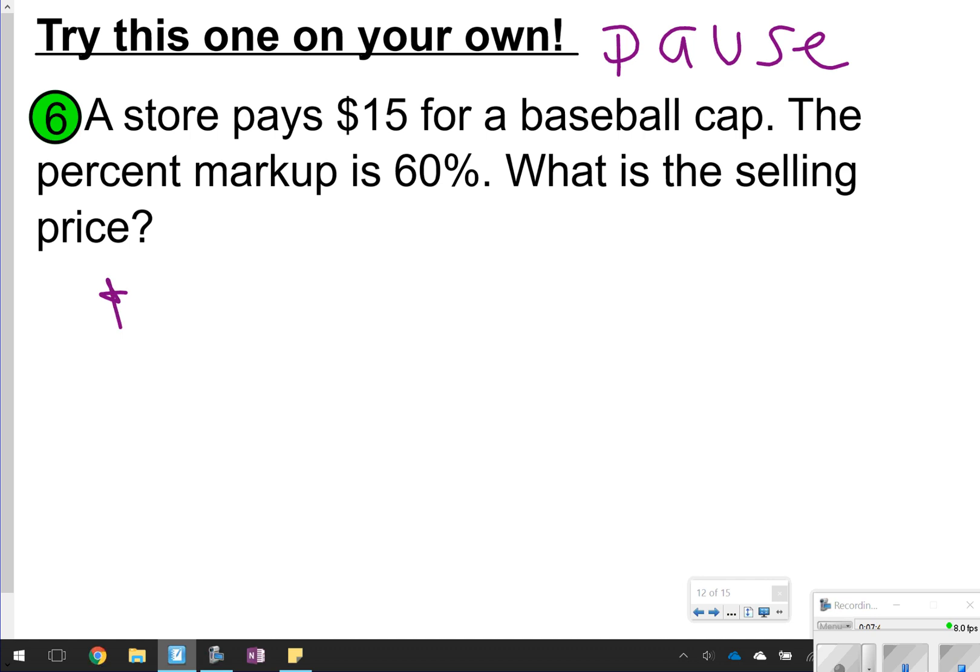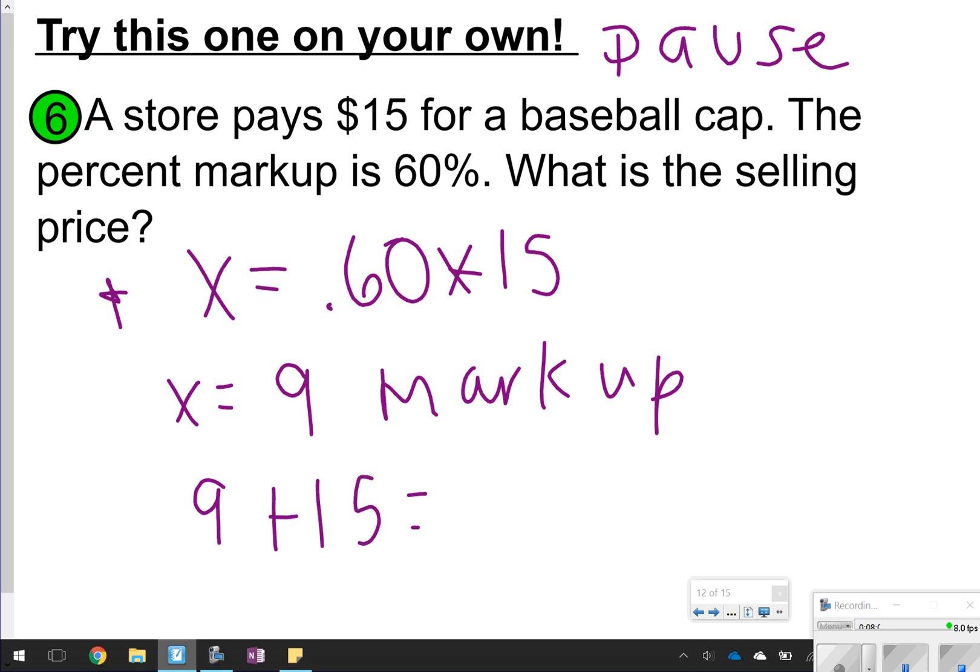All right. So $15 is what the baseball cap is. So we're going to find 60% of that 15. So basically 0.60 times 15, and we got 9. So that's the markup. To find the selling price, we would just do 9 added back to the 15, and we should get 9 plus 15 is 24. So 24 would be what I sell it at. Okay. How'd you do?